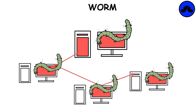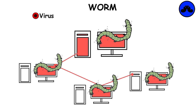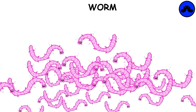Worms almost always cause at least some harm to the network, even if only by consuming bandwidth, whereas viruses almost always corrupt or modify files on a targeted computer. Many worms are designed only to spread and do not attempt to change the systems they pass through.